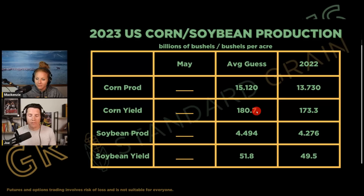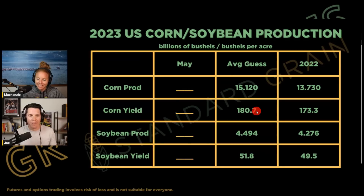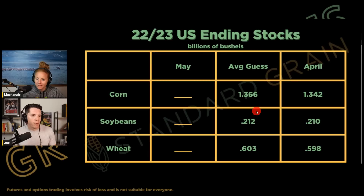I'm going to title this video something like 'Guess the U.S. Corn Yield,' and people are going to get all worked up because I'm going to put 181.5 in the picture. But it's just not anything to argue about at this point because we just don't have enough to go off of.